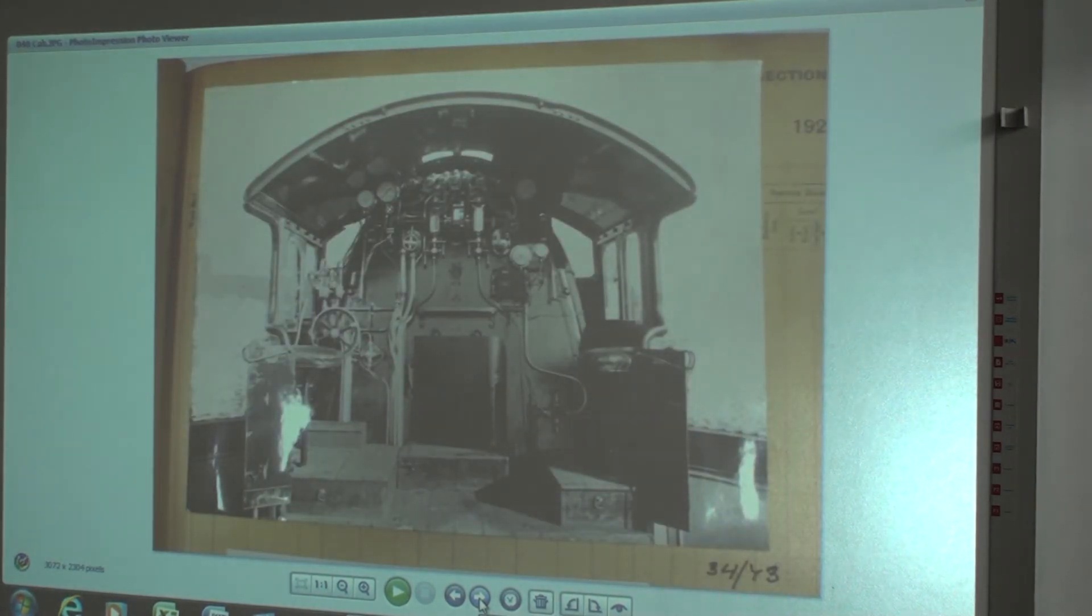So there's the cab in 1934. Across the top here is what we call a manifold. Basically it's just a piece of pipe with lots of other big pipes going off it. It's like a spreader, if you like. And that feeds the steam out to everything that you're interested in, pressures, etc.